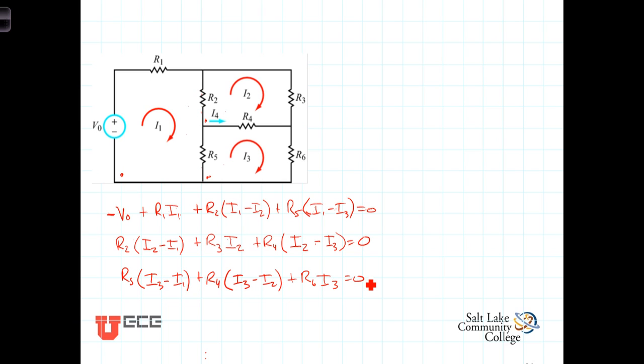Let's just go ahead and complete this by factoring out the mesh currents and combining like terms. We have for the top equation: I1 times R1 plus R2 plus R5, plus I2 times negative R2, plus I3 times negative R5, and the sum of those equals positive V0.